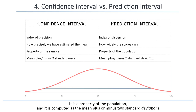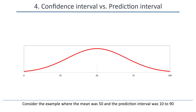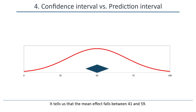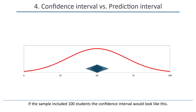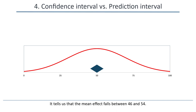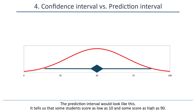Consider the example where the mean was 50 and the prediction interval was 10 to 90. We can also report a confidence interval. If the sample included 20 students, the confidence interval would look like this — it tells us that the mean effect falls between 41 and 59. The prediction interval would look like this — it tells us that some students score as low as 10 and some score as high as 90. If the sample included 100 students, the confidence interval would look like this — it tells us that the mean effect falls between 46 and 54. The prediction interval would look like this — some students score as low as 10, and some score as high as 90.